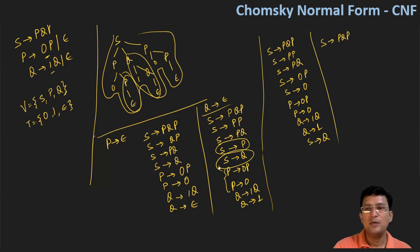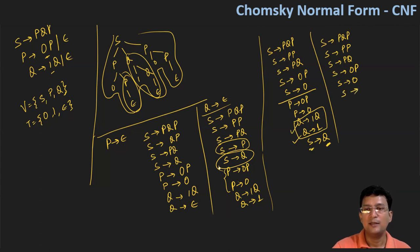We keep S produces PQP, S produces PP, S produces PQ, S produces zero P, and S produces zero unchanged. Now to remove the unit production S produces Q, all productions generated from Q get added to S. So S produces one Q and S produces one are added. P produces zero P, Q produces one Q, and Q produces one stay. This unit production is now removed.